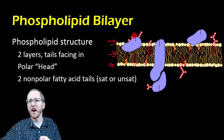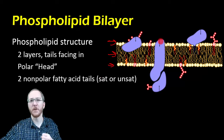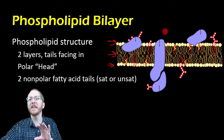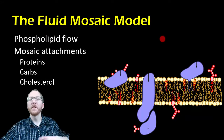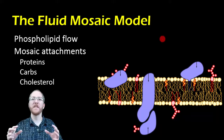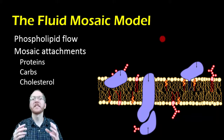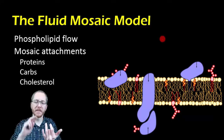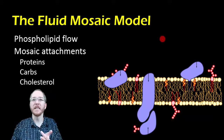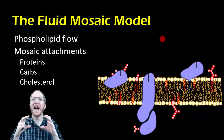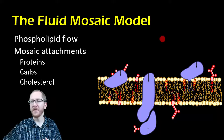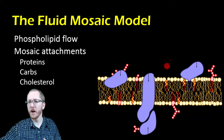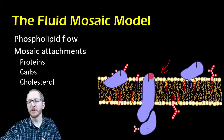Now with the fluid mosaic model, this is the description of not just the phospholipid bilayer but all the other stuff added to it. Scientists learned early on that besides the phospholipid bilayer, there are proteins that are part of this membrane. What we have now is a good idea of how this works: we have the basic phospholipid bilayer, but then proteins are stuck through it. What you see here would be an integral protein — going all the way through the membrane.